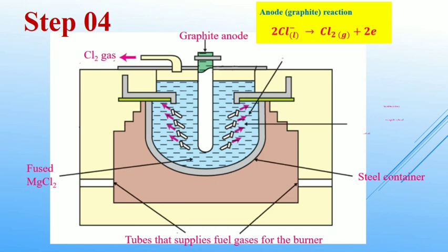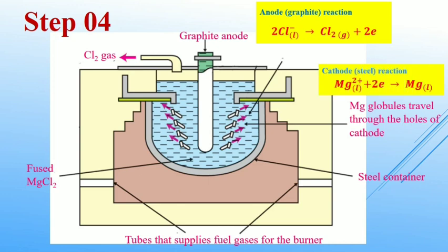In the steel cathode, magnesium globules are produced as in this equation. Actually, magnesium globules can be withdrawn from the cell easily because density of magnesium is lower than magnesium chloride. Then magnesium globules float on the fused magnesium chloride. Then the liquid magnesium is taken out from the cell and cooled to get magnesium metal.